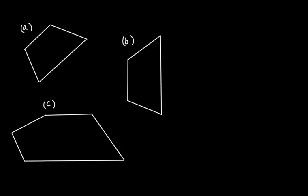In figure A, this is a trapezium because this pair of opposite sides is parallel, but this pair of opposite sides are not parallel to each other. In the next figure, you again have a quadrilateral because it has four sides, and this pair of opposite sides is parallel but this pair is not parallel.